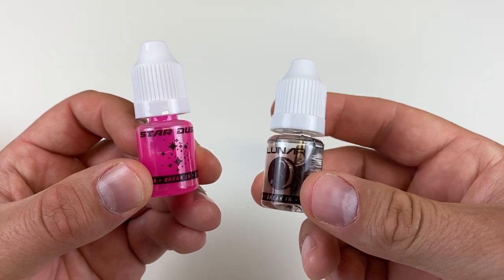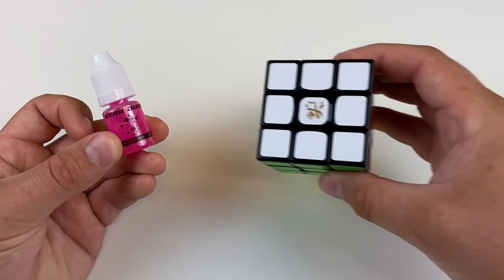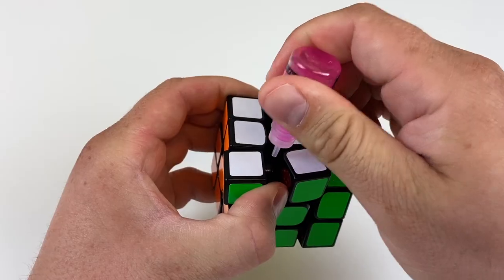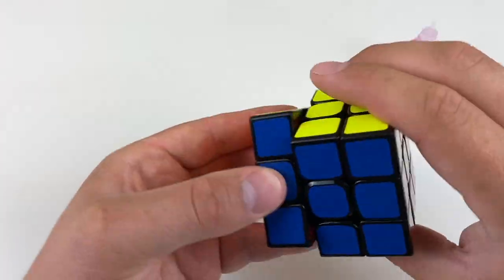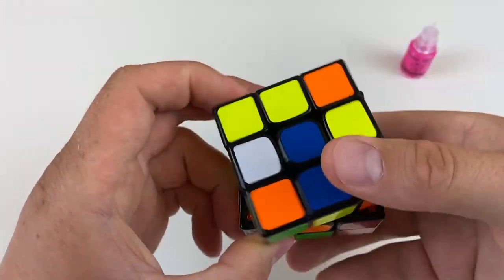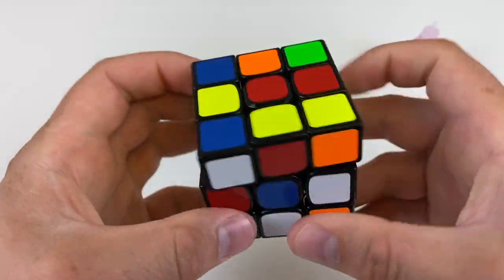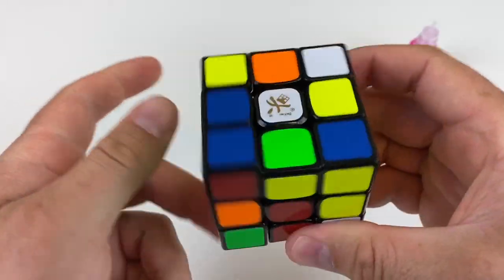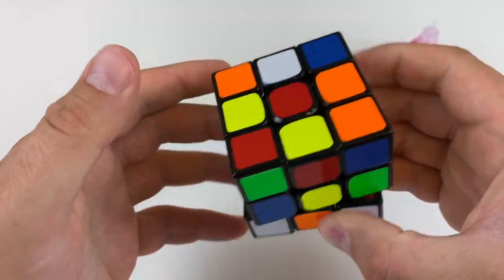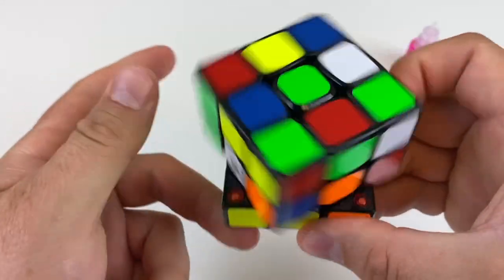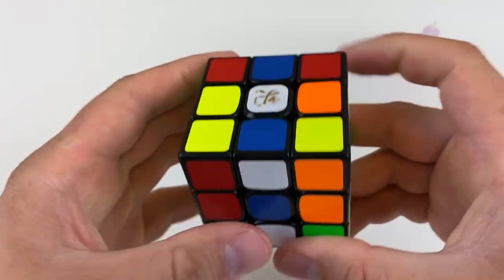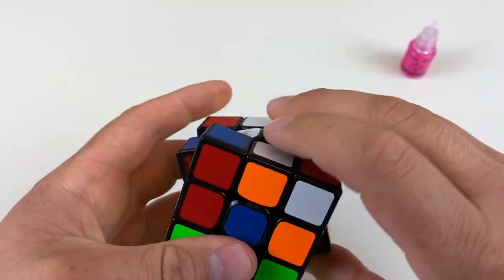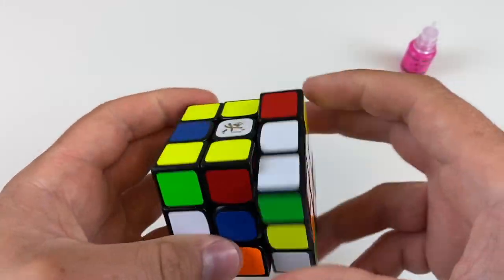I've experienced Lunar before, but I'm going to start with Stardust. I've cleaned my new Dayan Zhanchi, and I'm ready to add Stardust. So the Stardust feels a bit off. There's something missing. I'm not entirely sure if it's because it's water-based, but I don't get the same feel that I'm used to. Maybe I'm spoiled with silicone-based lubes, but I can't quite pin what's missing.